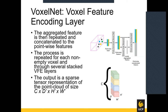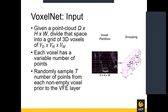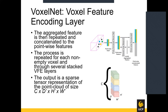A clarifying question was raised about the color-coded points in the diagram. Each color represents the encoded feature from a different voxel. The randomly sampled points within each voxel carry the x, y, z coordinate and intensity value, which are concatenated into a vector for each point in that voxel.